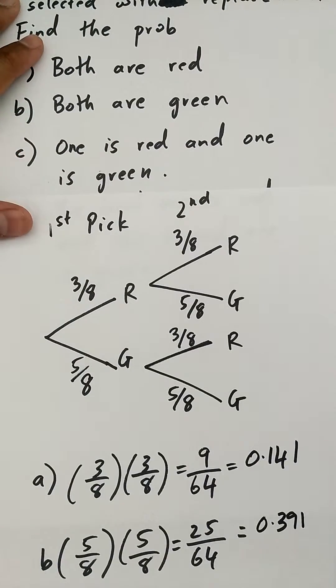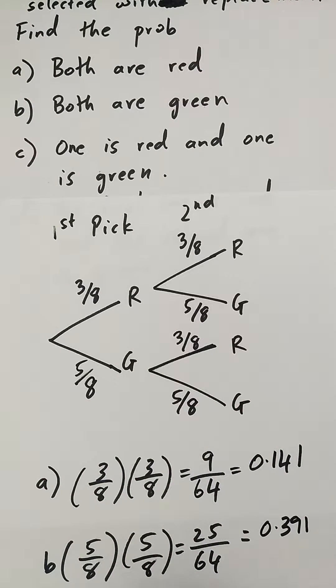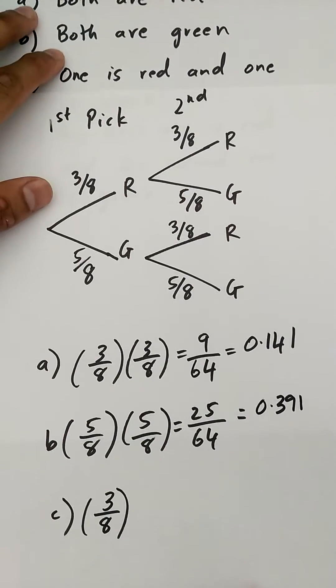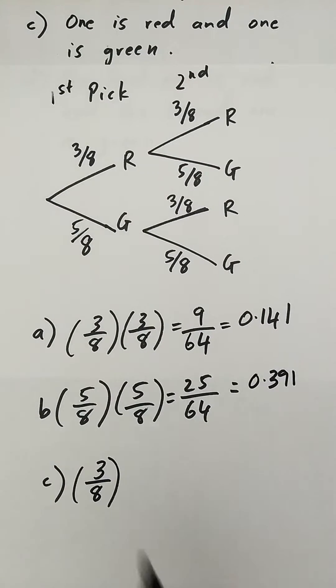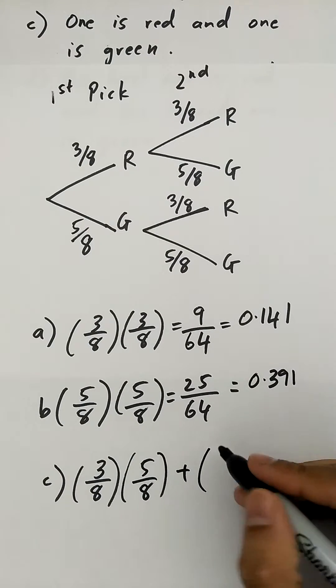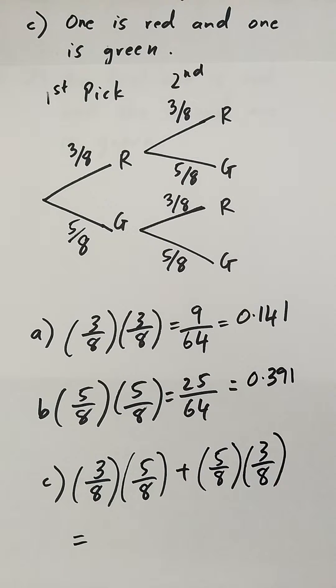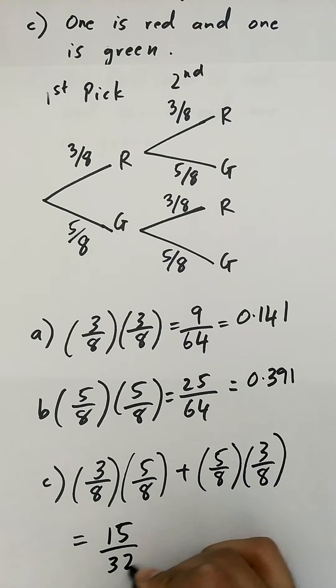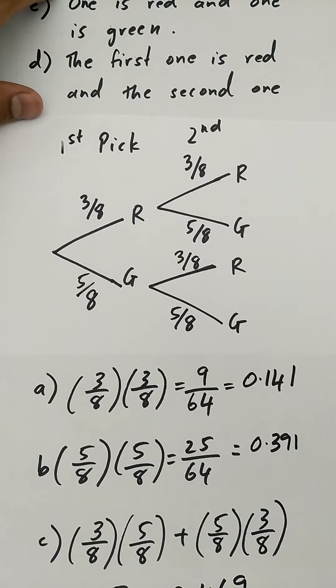Part c, one is red and one is green. So that's that pathway and this one right here. So you have 3 over 8 times 5 over 8, so that's red green, plus green red, which is 5 over 8 times 3 over 8. That's going to be equal to 15 over 32, 0.469.